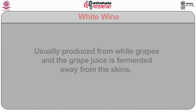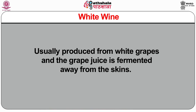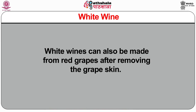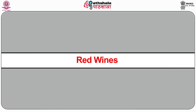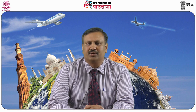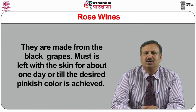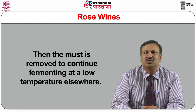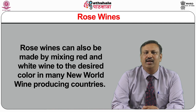White wine is usually produced from white grapes with the grape juice fermented away from the skin; white wines can also be made from red grapes after removing the grape skin. Red wines are fermented with the grape skins, from which the wine gets its color. Blush wine is an American invention — a pale pink-blue wine made from red grapes where the skins are only in contact with the must for an hour or two during fermentation. Rosé wines are made from black grapes; must is left with the skin for about one day or until the desired pinkish color is achieved, then the must is removed to continue fermenting at a low temperature. Rosé wines can also be made by mixing red and white wine to the desired color in many new world wine producing countries.